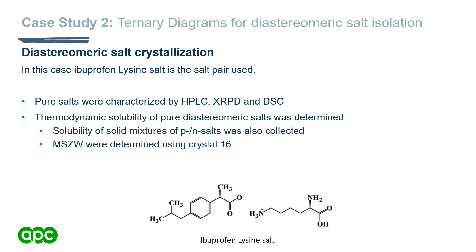First we characterize our salts by HPLC, XRD, and DSC. Then, in an analogous manner to case study one, we conduct thermodynamic solubility of the pure diastereomeric salts by HPLC, followed by solubility of solid mixtures of the P and N salts. We then use Crystal16 to gain clear and cloud points, which allows us to define the metastable zone width of our salts — highly important when designing the crystallization.